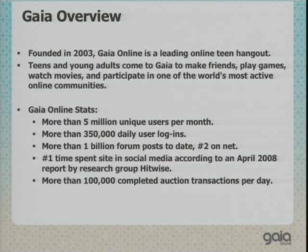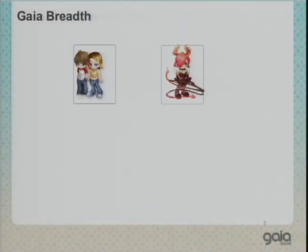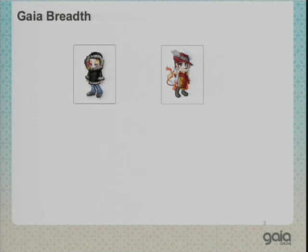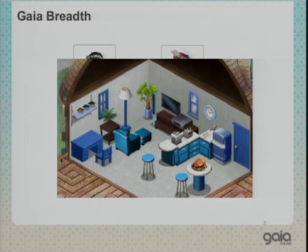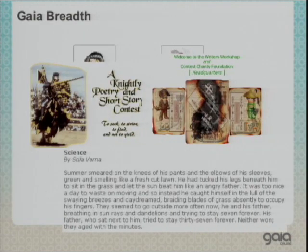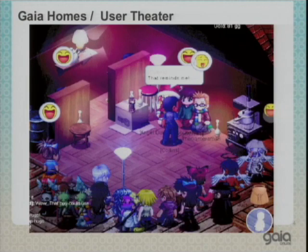We have more than a billion forum posts daily, making us the number two forum and bulletin board site — we passed AOL somewhat recently. We're also number one in time spent in social media according to HitWise, and we do more than 100,000 auctions every day. On the site, users have avatars, put on clothes, and do wacky stuff. You have all your friends, can keep track of them, talk with them, and soon you'll be able to teleport to exactly where they are. You can develop houses, people visit you, and there are clubs and creative areas for writing, style, and artwork.